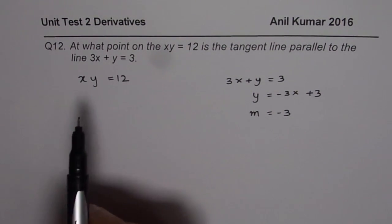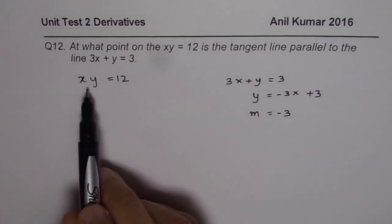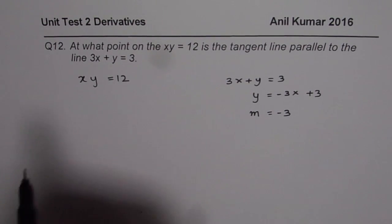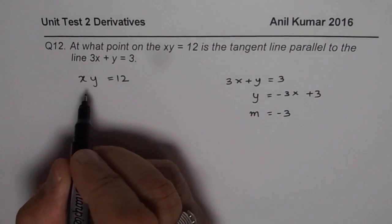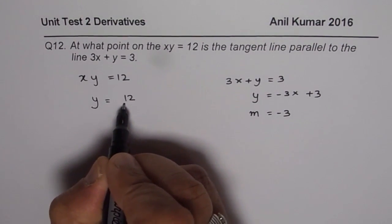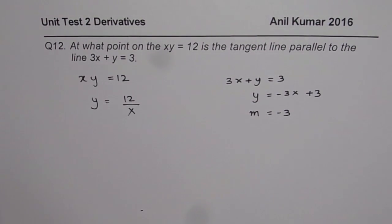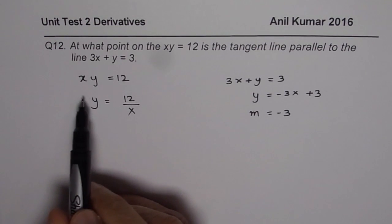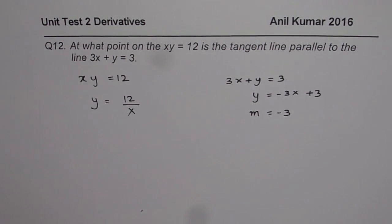We have not learned different rules which could help us solve this question. So what we should do at this stage is that we can write y as equals to 12 over x. Now that makes it very simple. So whenever you have a function where x and y are mixed together, you have to somehow isolate y to apply the rules which you have learned.